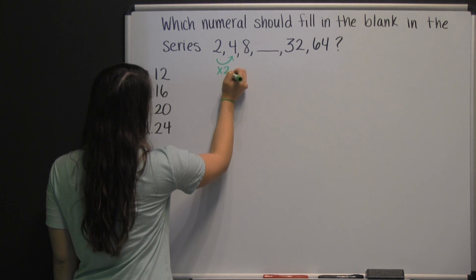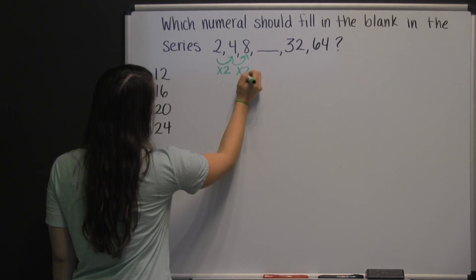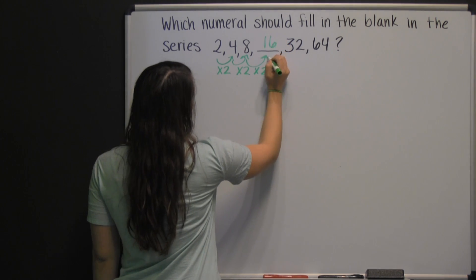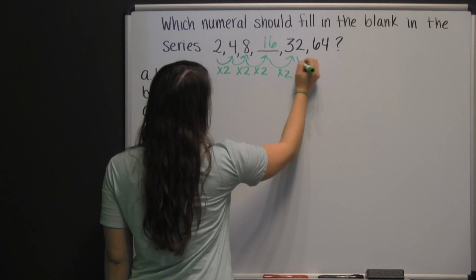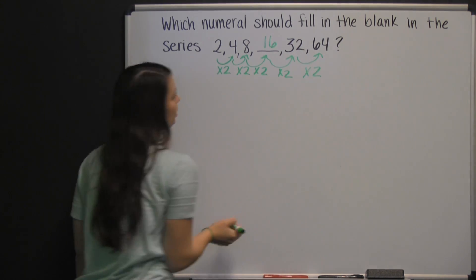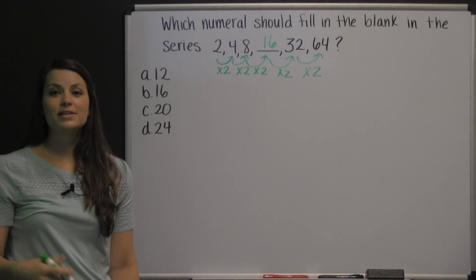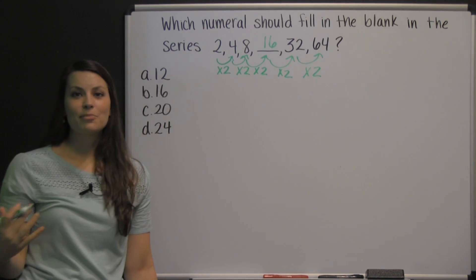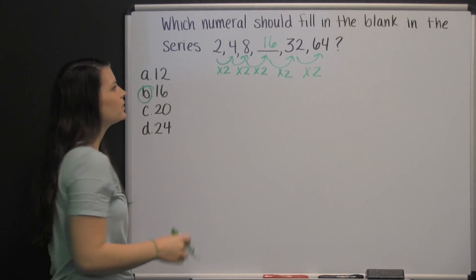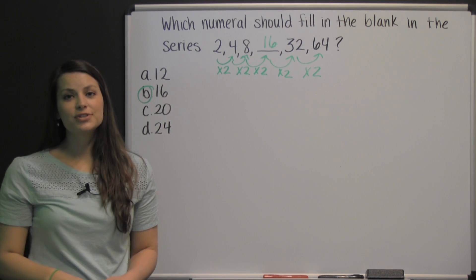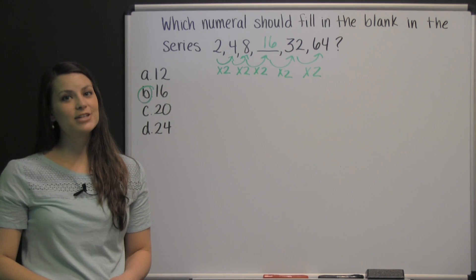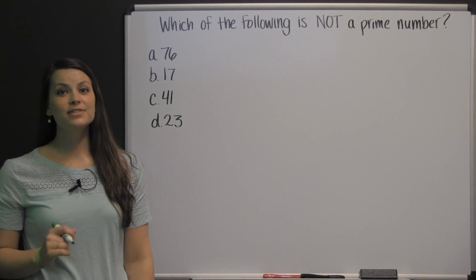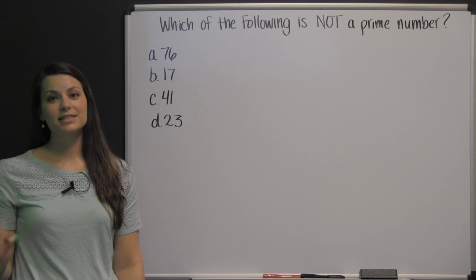Eight times two is sixteen. And sixteen times two is thirty-two. And thirty-two times two is sixty-four. So the pattern of multiplying the previous term by two works throughout the pattern to fill in that missing blank with the number sixteen. So again, this is a type of question you'll see on the quantitative skills section of the HSPT practice test.